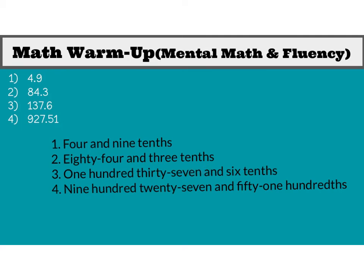Once again, check for that THS. Number three, one-hundred-thirty-seven and six-tenths. Again, checking for that THS at the end. And number four, nine-hundred-twenty-seven and fifty-one-hundredths. So notice this one was hundredths with a THS at the end.